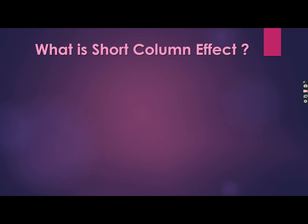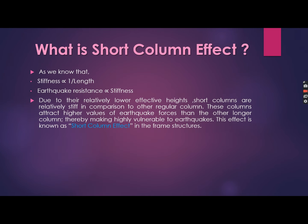What is the short column effect? As we know, stiffness is inversely proportional to length, and earthquake resistance is directly proportional to stiffness. Due to this, lower effective height makes short columns stiffer in comparison to regular columns. These columns attract higher values of earthquake forces than longer columns, thereby making them highly vulnerable to earthquakes. This effect is known as the short column effect in frame structures.